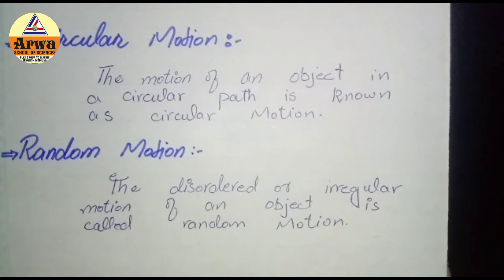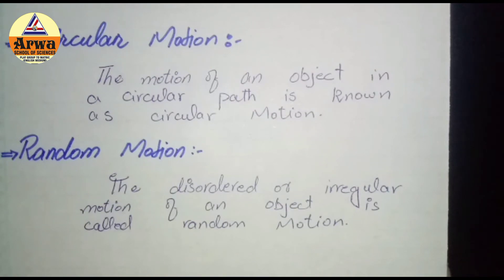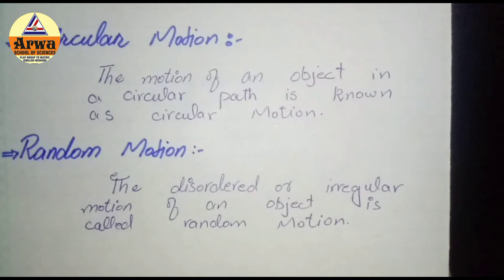Iske kuch examples hain: a stone tied at the end of a string moves in a circle — jab aap us string ko circle mein move karte hain, to stone ka motion circular motion hoga kyunki wo circular path mein move kar raha hai. Similarly, a toy train moving in a circular track — aap aksar parkon mein dekhte hain ki toy train jo hai wo circular path mein move kar rahi hai, to us train ka motion bhi circular motion hai.